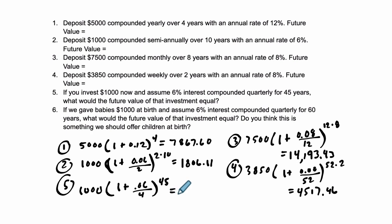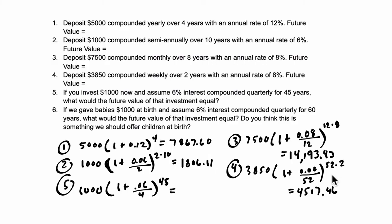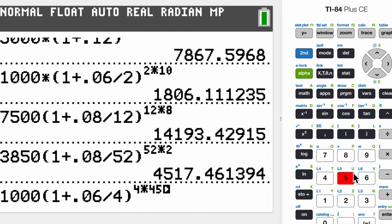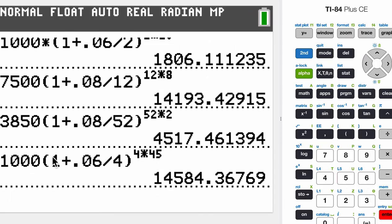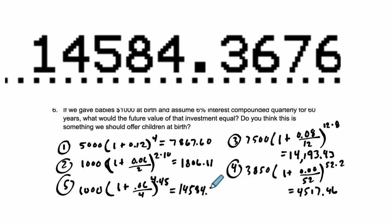We can look at what that would equal, just that one investment. So we take $1,000, multiply it by 1 plus 0.06 divided by 4, to the 45th power. Oh, to the power of 4 times 45. So let me fix that. It's 4 times a year for 45 years. So for that $1,000 you invest, you get $14,584.37. It's quite a bit. So $14,584.37.